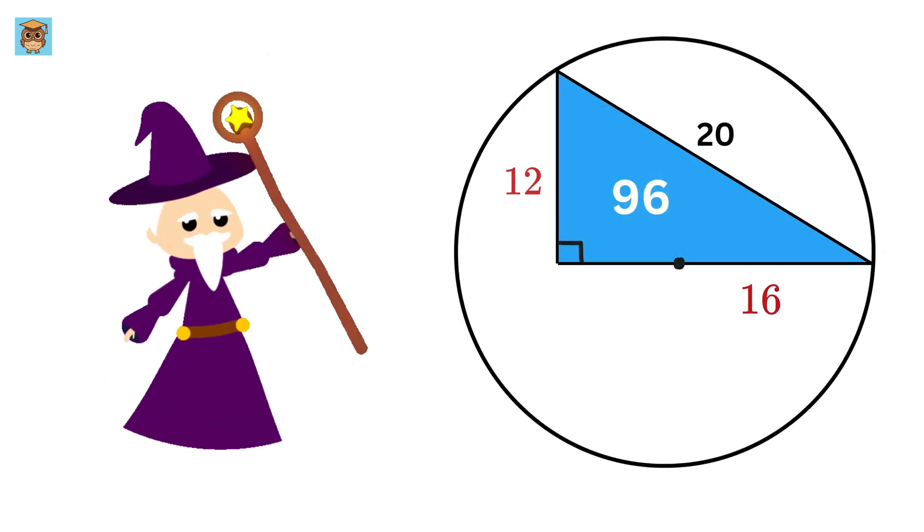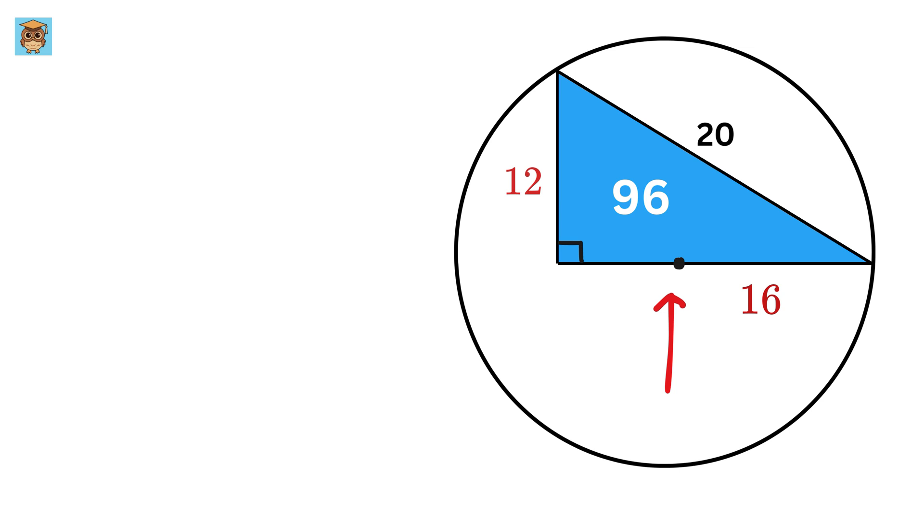Now, here comes the magic. Since this is the center of this circle, if we extend this line on the opposite side, then we get this length also equal to 12. Now, extend this line to make a diameter like this, and label it as x.